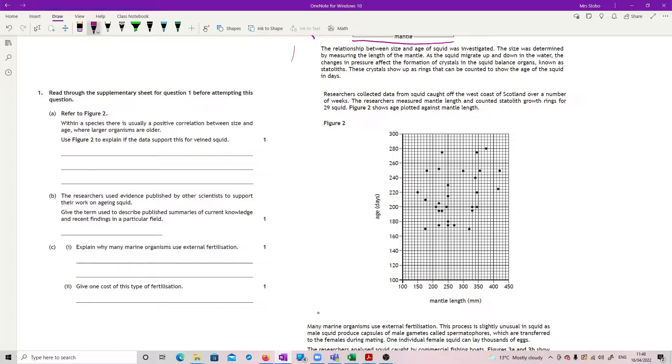Use this figure 2 to explain if the data supports this for veined squid. As I said, I can't see that data. That line that I just took out and put back in, is that line there with an increased mantle length and increased age in days? You've got these ones here, which are biggest in terms of mantle length, but they're not the oldest. The oldest, you've got here, you've got really quite an old one, but with a smaller length.